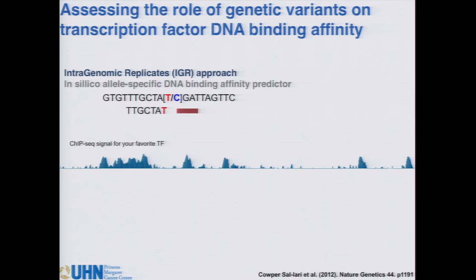To improve on methods for calling allele-specific biases induced by SNPs on transcription factor binding, we developed our own methodology called IGR, for Intra-Genomic Replicates. The principle is simple: given a SNP of interest — say a T or C allele — lying within a known contextual sequence, we look for 7-mers, 8-mers, or 9-mers spanning the contextual sequence and the SNP of interest, one position at a time. For each k-mer, we map all instances across the genome and compute the ChIP-seq signal for the transcription factor of interest over those sequences.